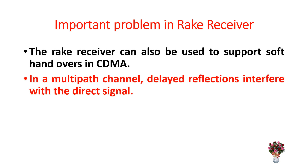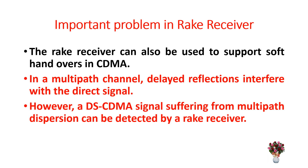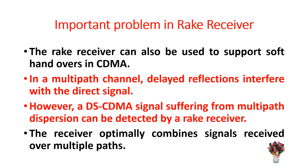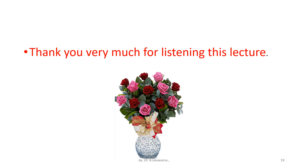The rake receiver can also be used to support soft handovers in CDMA. In a multipath channel, delayed reflections interfere with the direct signal; however, a DS-CDMA signal suffering from multipath dispersion can be detected by a rake receiver, which optimally combines signals received over multiple paths.